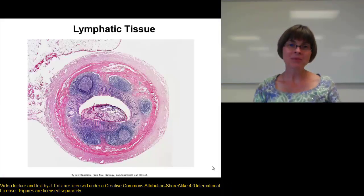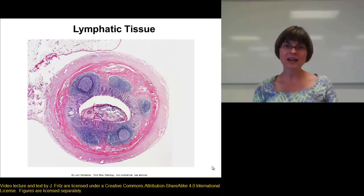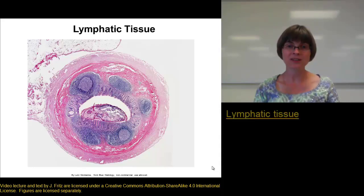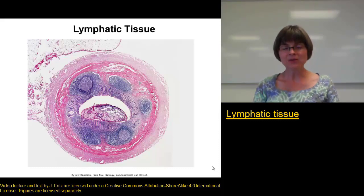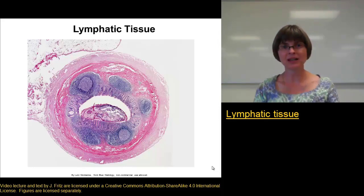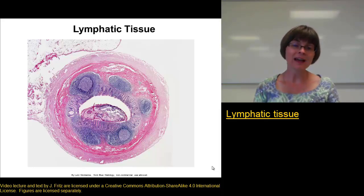If you remember your levels of organization, when we put together some cells we end up with tissues, and there is lymphatic tissue in the body. These are aggregations of lymphatic cells held together by some connective tissue, but they're not really separated much from the tissue surrounding them. There are two types of lymphatic tissue to be aware of.